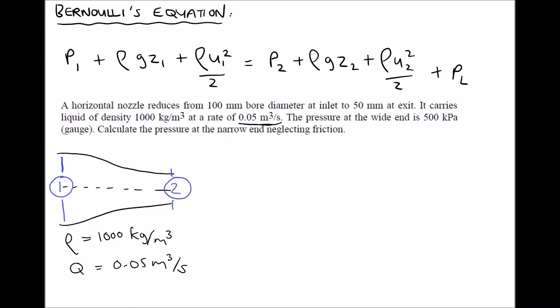It goes on to tell us that the pressure at the wide end is 500 kilopascals gauge. Well, just from our sketch we know that our wide end is position 1. So we know that P₁ is 500 kilopascals. And it wants us to calculate the pressure at the narrow end, so it wants us to calculate the pressure P₂.